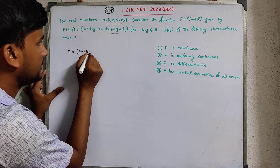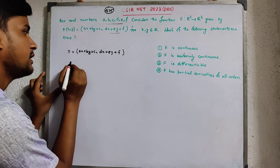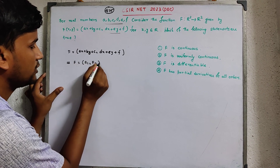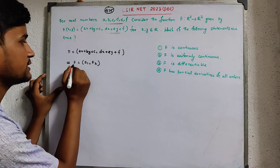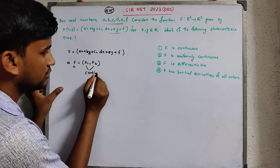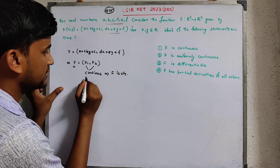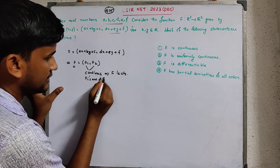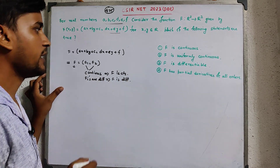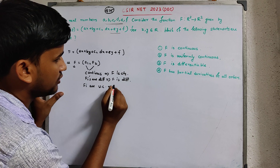Given F = (F1, F2) where F1 = ax + by + c and F2 = dx + ey + f, we apply a key concept: if both component functions F1 and F2 are continuous, then F is continuous. If both F1 and F2 are differentiable, then F is differentiable. Similarly for uniform continuity — if both F1 and F2 are uniformly continuous, then the whole function F is uniformly continuous.